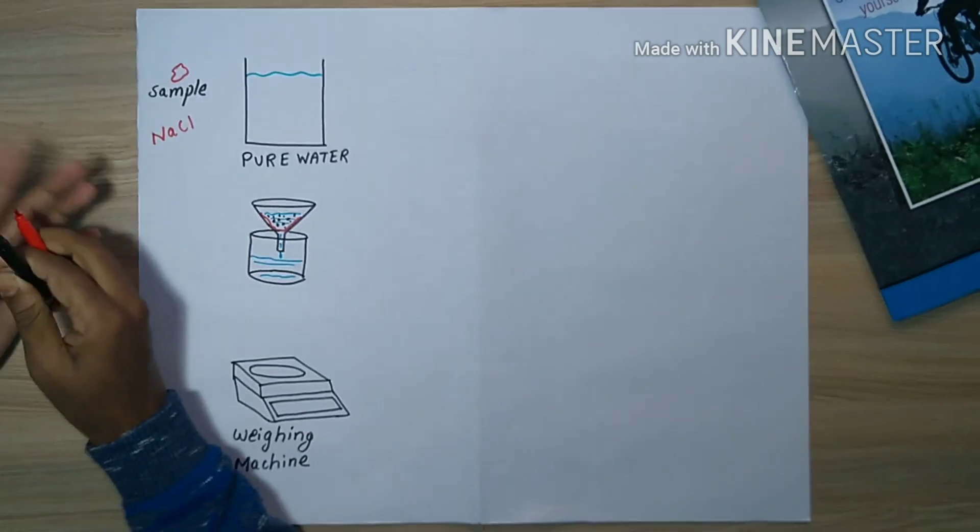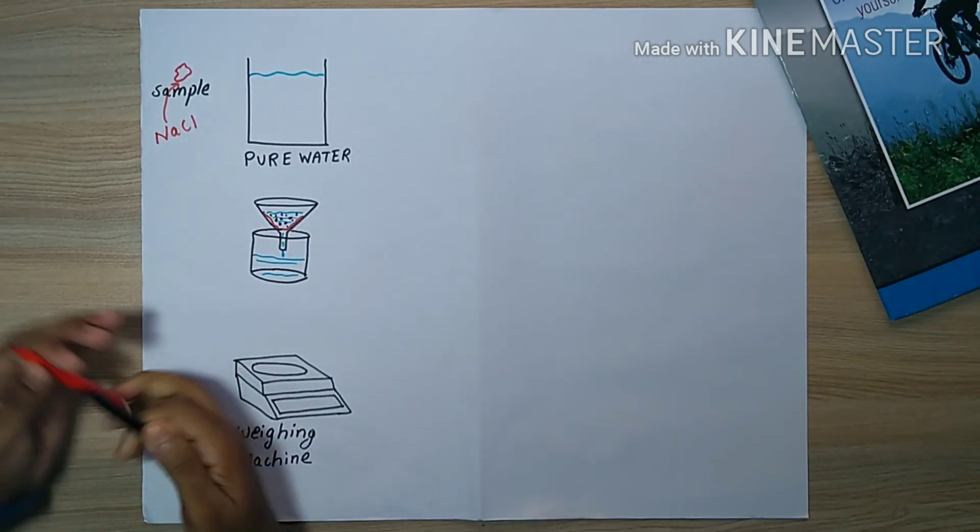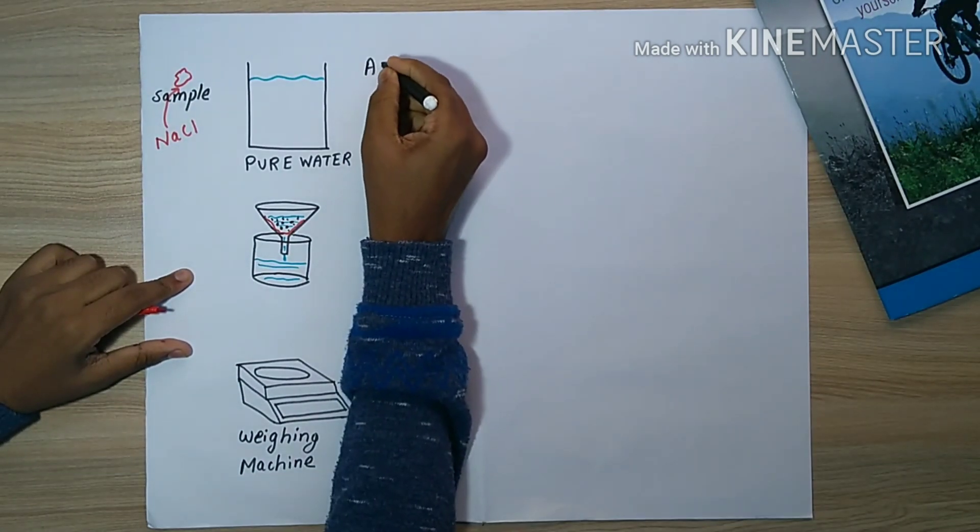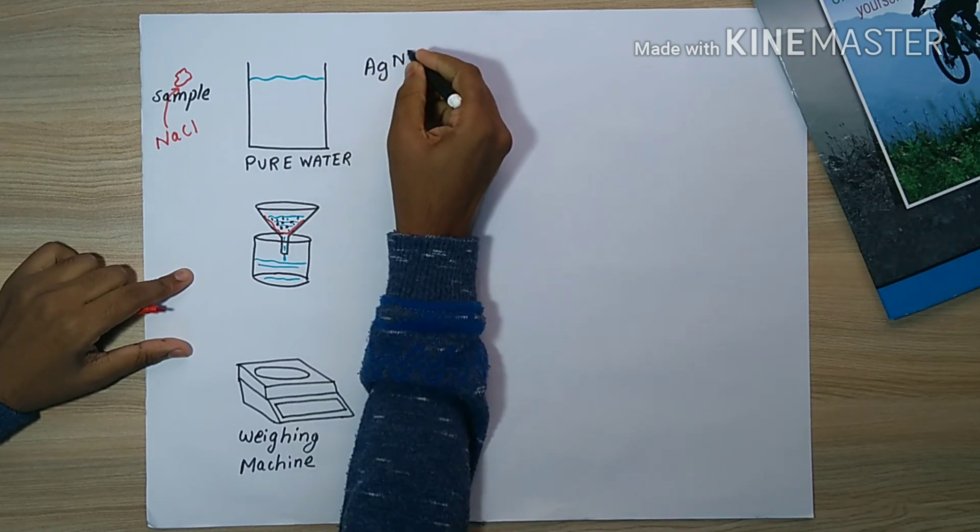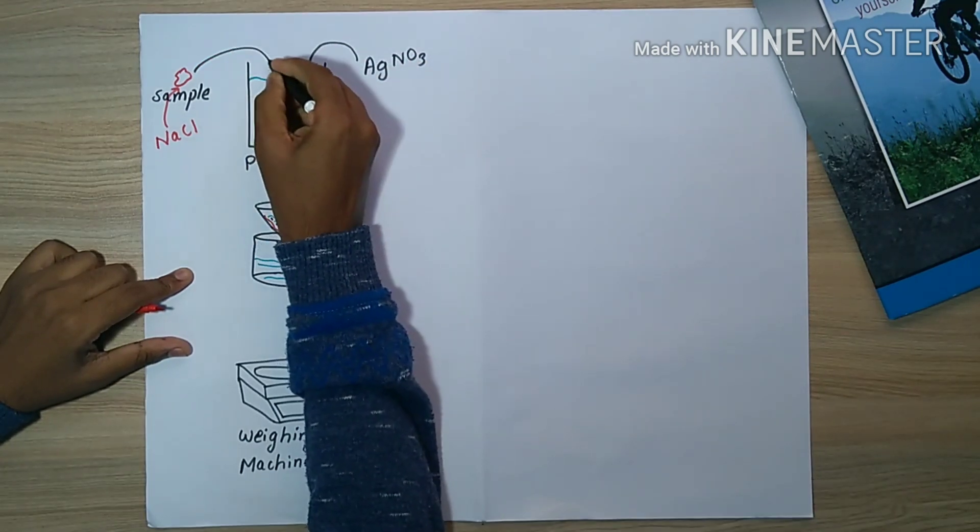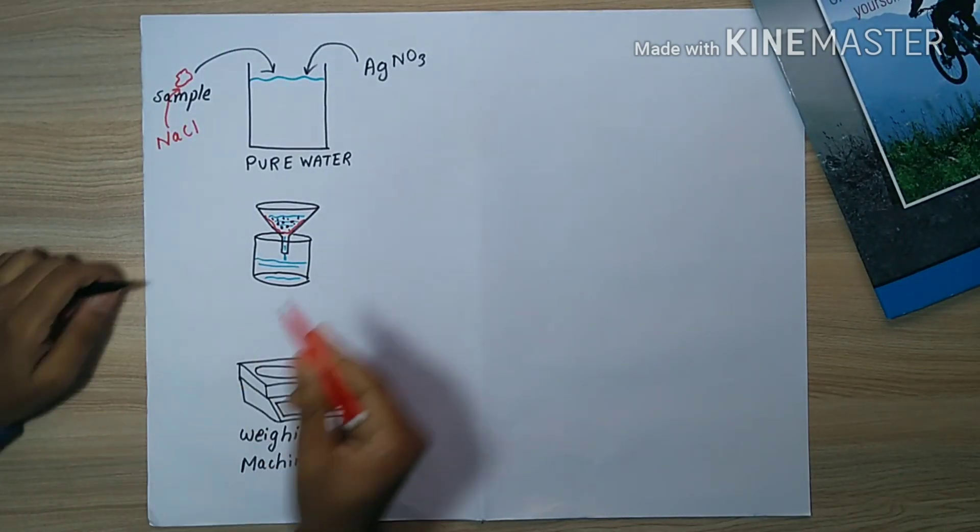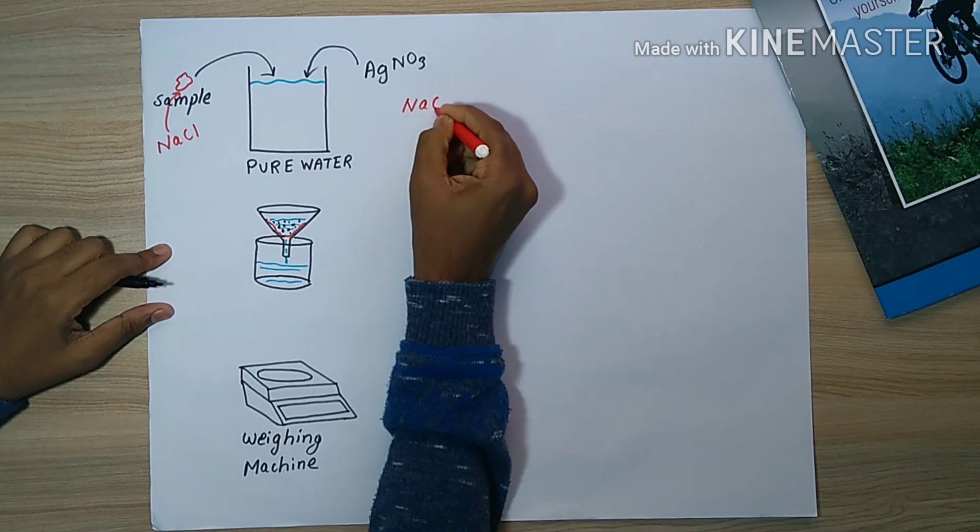Here I took the sample to be NaCl for example, and the reagent that I am using to make the precipitation occur is AgNO3, silver nitrate. The preparation of solution of AgNO3 and NaCl is the second step - preparation of solution.